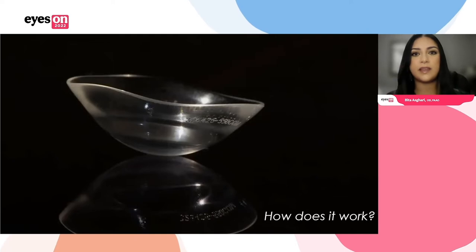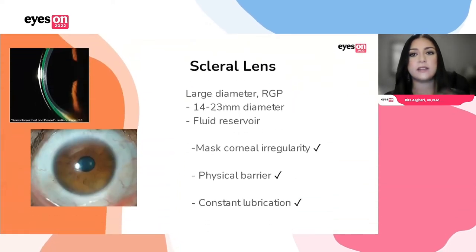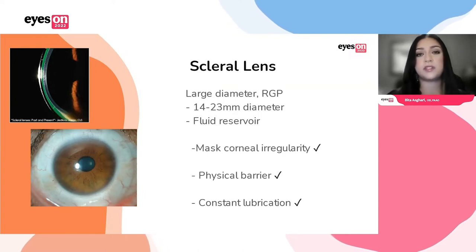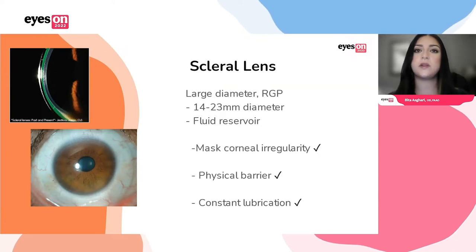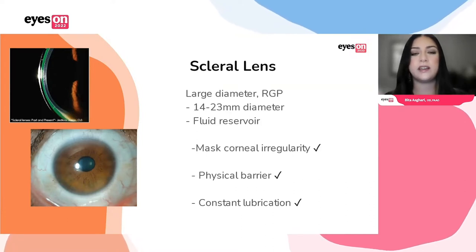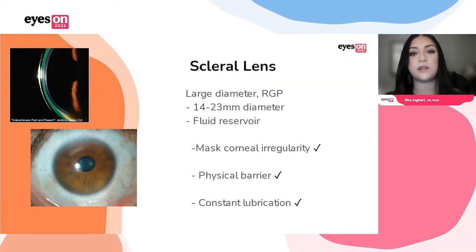Let's get down to the very basics of what this piece of plastic is and what the scleral lens is capable of doing. A scleral lens lands on the white part of the eye — scleral — and because of that it is a larger diameter lens. It is made of a rigid gas permeable material similar to your corneal GP lenses, and can range anywhere between 14 to 23 millimeters in diameter. A true scleral lens lands completely on the white part of the eye, but there are smaller versions — mini scleral, etc. — that you may be familiar with as well.